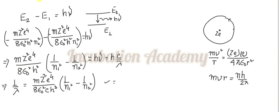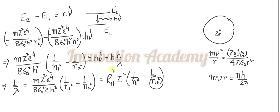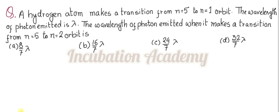From this equation we can identify the Rydberg constant R_H, which is basically 109737 cm inverse, multiplied by z squared times (1 over n1 squared minus 1 over n2 squared), where n1 is the lower orbit and n2 is the upper orbit. Let us concentrate on the math. For the first case, 1 over lambda equals R_H, with z equal to 1, from n equal to 5 to n equal to 1, so it is 1 over 1 squared minus 1 over 5 squared.